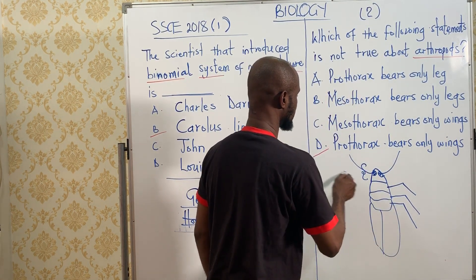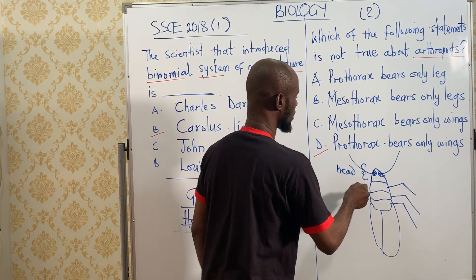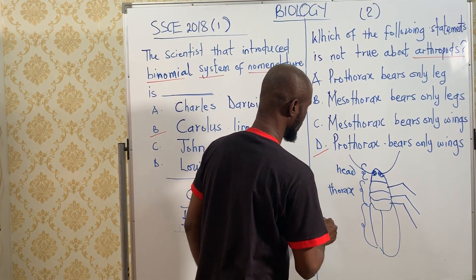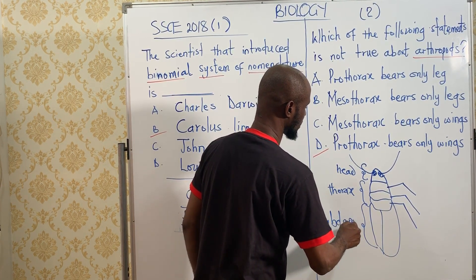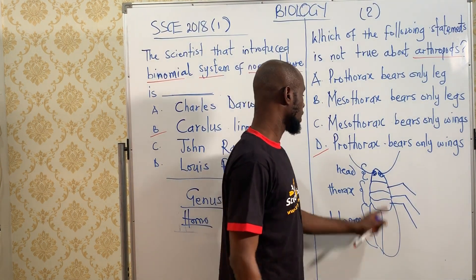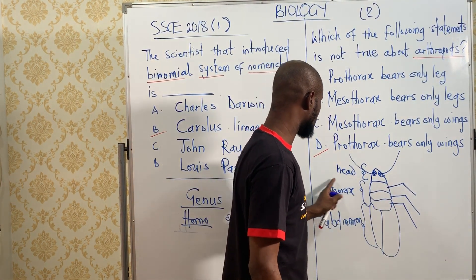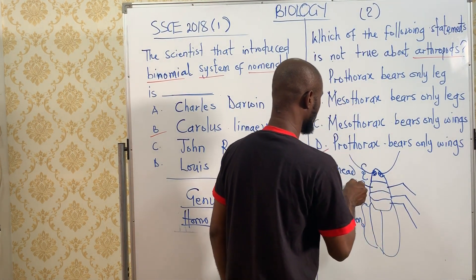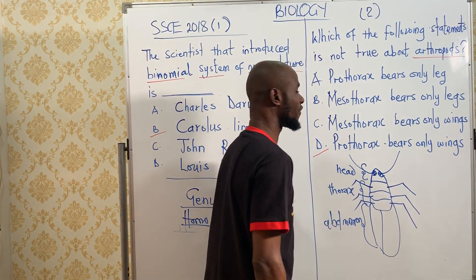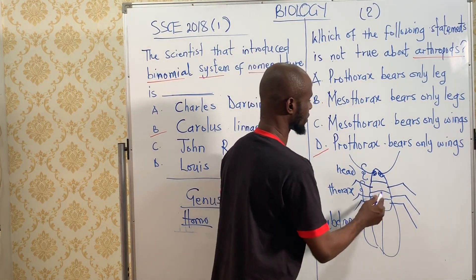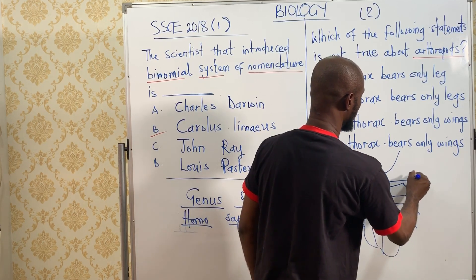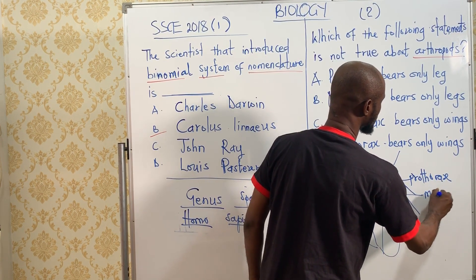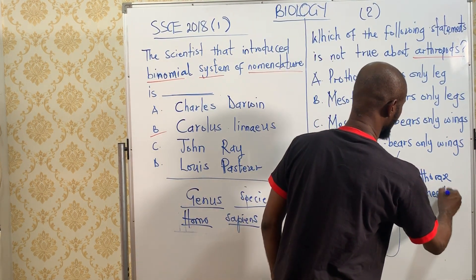So you can see that this is the head — that's the first part. Then this is the thorax, that is the chest. And we have the abdomen. Each of the segments of the thorax has a leg — a pair of legs in each segment. The first segment is called the prothorax. The next segment, the medial one, is called the mesothorax — meso always means medial, don't forget it.